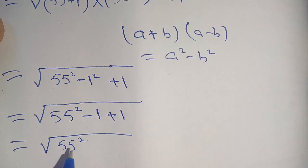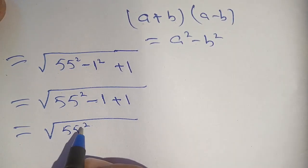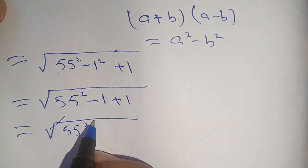Thus only remaining is 55 squared. Now we can cancel out this square with the square root and we have only 55 as our solution.